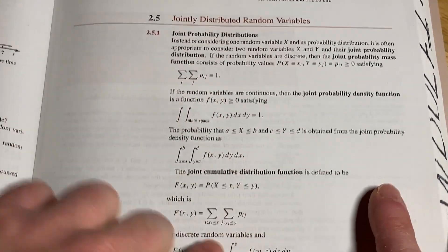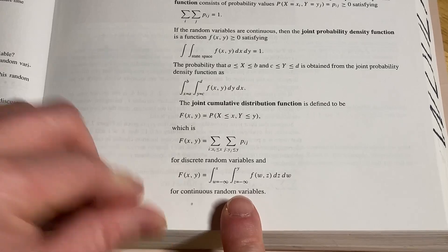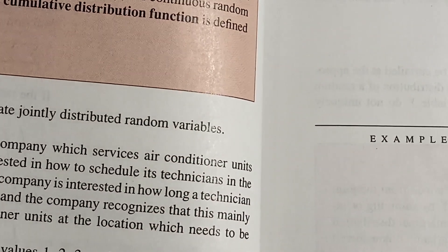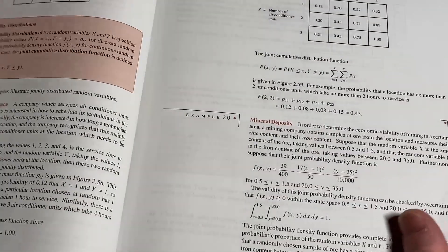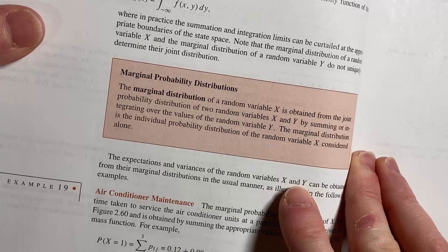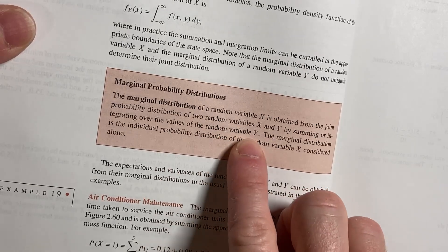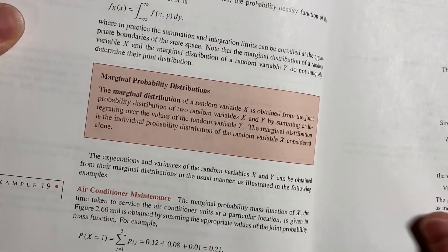I wanted to show you some calculus. You have the joint distributions. The joint cumulative distribution function is defined this way, and then here it is for continuous. That iterated integral - you have two improper integrals, which is pretty cool. You're using that for probability. The marginal distribution of the random variable x is obtained from the joint probability distribution of two random variables x and y by summing or integrating over the values of the random variable y.